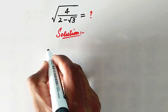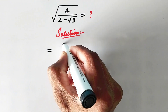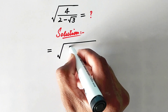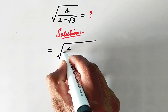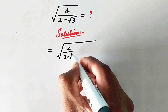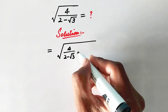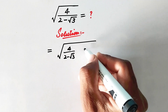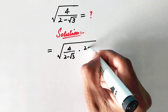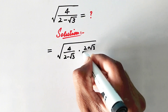In the first step we will write it equal to square root of 4 over 2 minus square root of 3, and here we will also multiply and divide this fraction by 2 plus square root of 3.